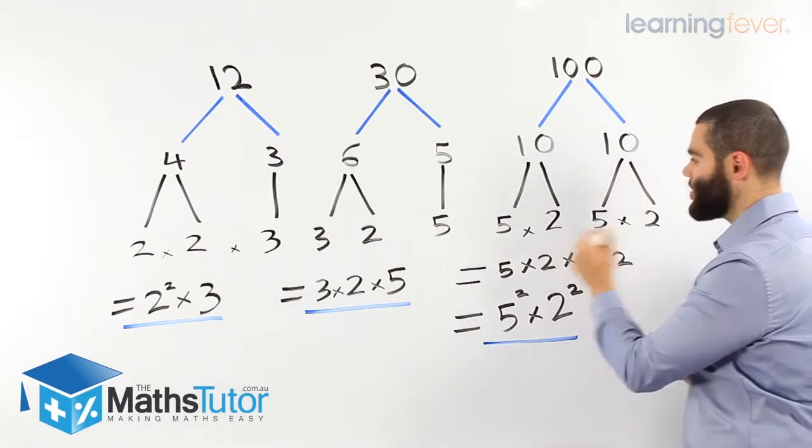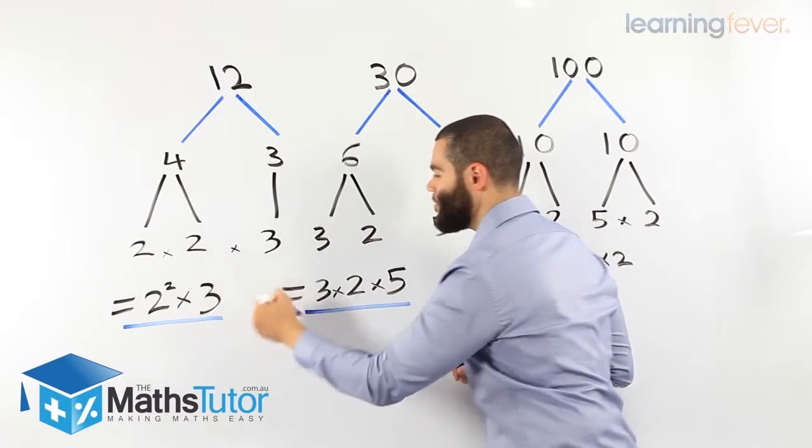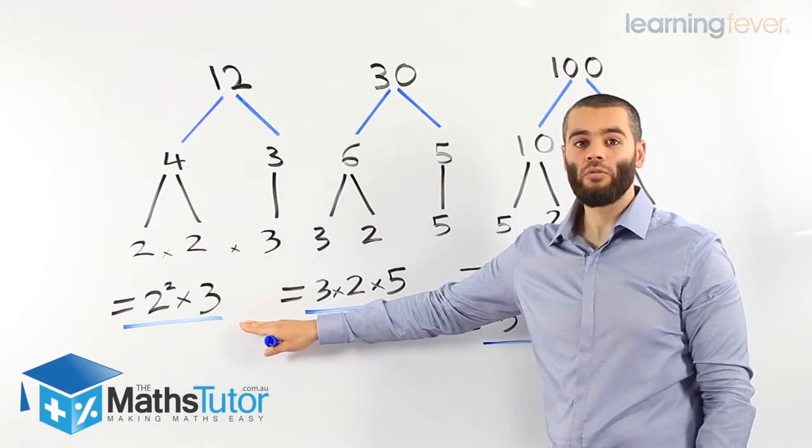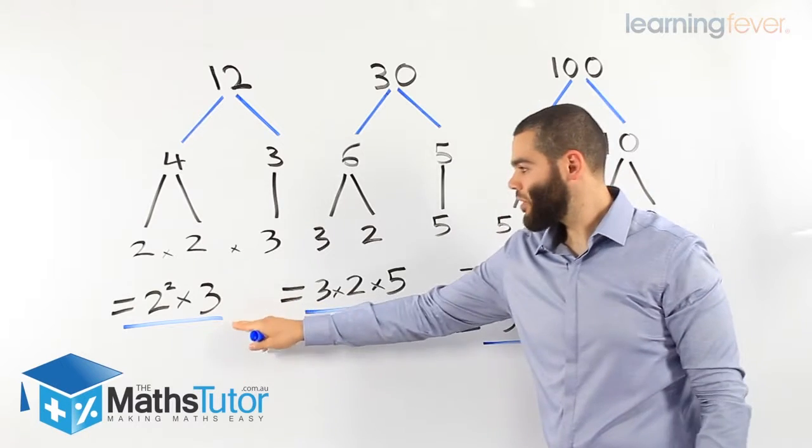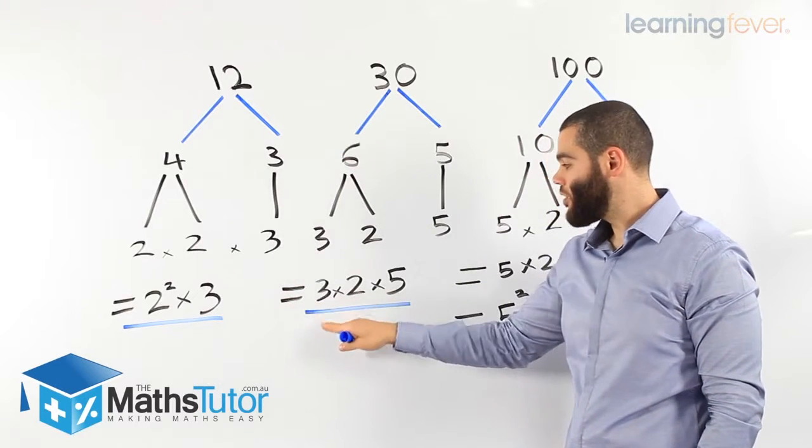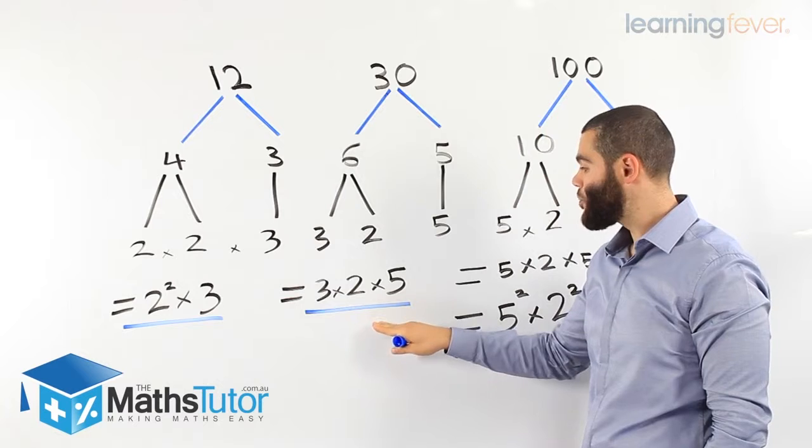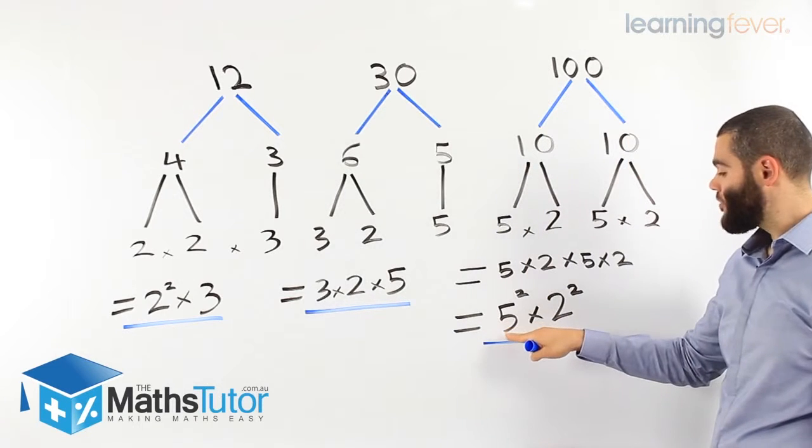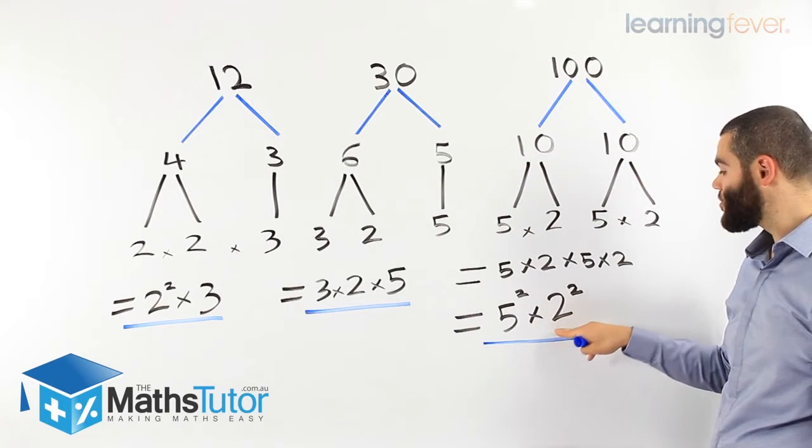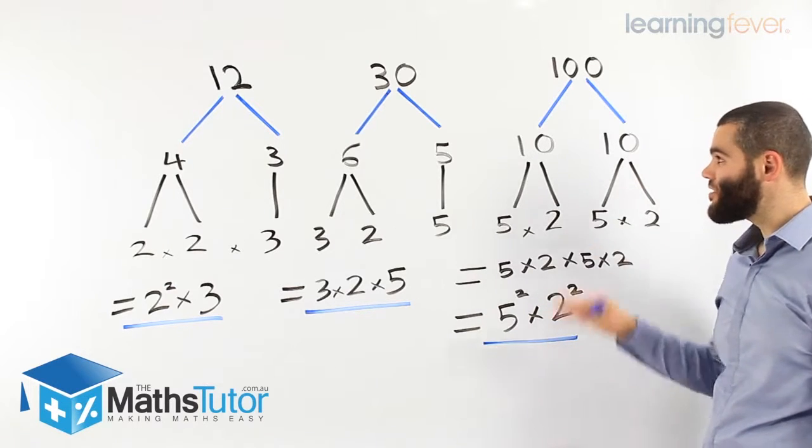Now here, we have our prime numbers, our prime, and our prime numbers, which we write in our final solution. 2 squared times 3 make 12, 3 times 2 times 5 are all prime numbers, they make 30, 5 times 5 times 2 times 2 make 100, these are the prime numbers.